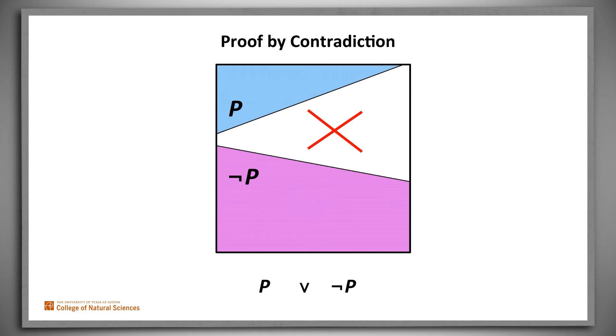The Law of the Excluded Middle is also the basis for proof by contradiction. To prove p, we simply prove that not p is false. That leaves p as the only alternative, and it must therefore be true. Alternatively, we can rule out p, leaving that not p must be true.